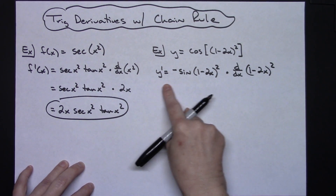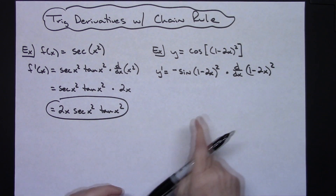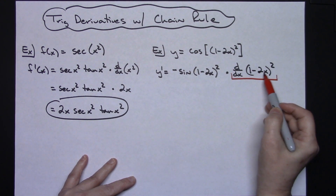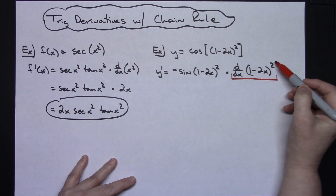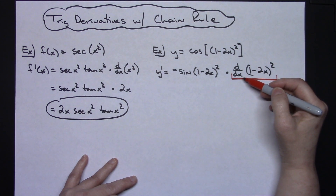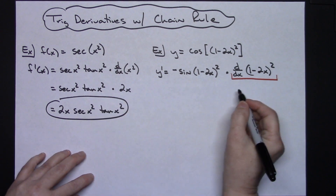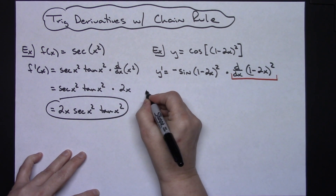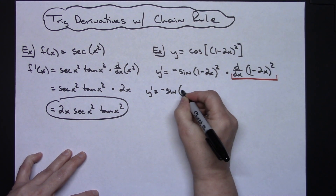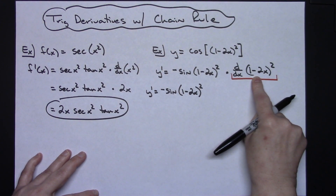On the next line, all of that stays the same and I focus on just this derivative. If you look closely, I have an inside function of (1 minus 2x) and an outside function of something being squared, so I'm going to have to use the power rule as my outer derivative and then chain on the inside. Scooting over to the left because it's going to get pretty long — y prime is equal to negative sine of (1 minus 2x) squared...